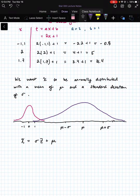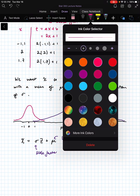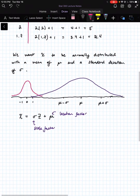So specifically our scale factor, remember this is the scale factor, and this is our location factor, correspond exactly to sigma and mu. And that's what it means to have a non-standard normal distribution. It is a normal distribution.